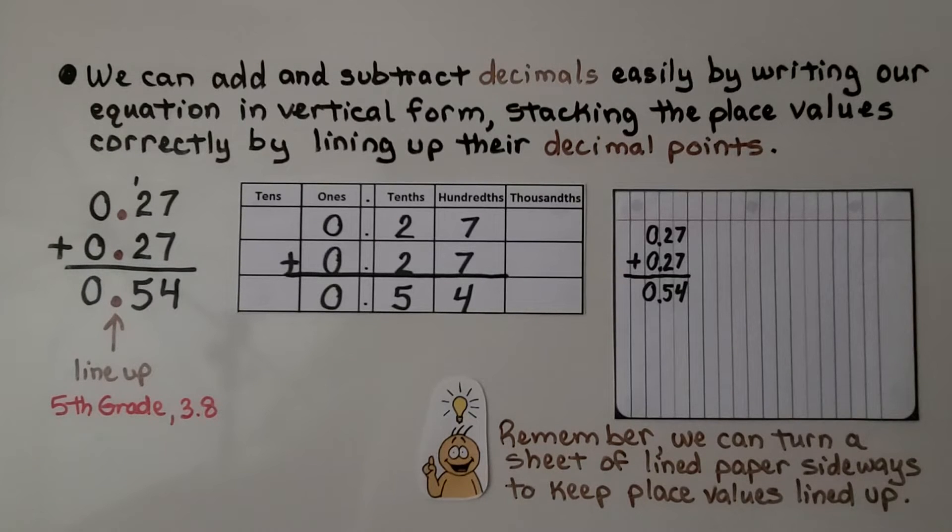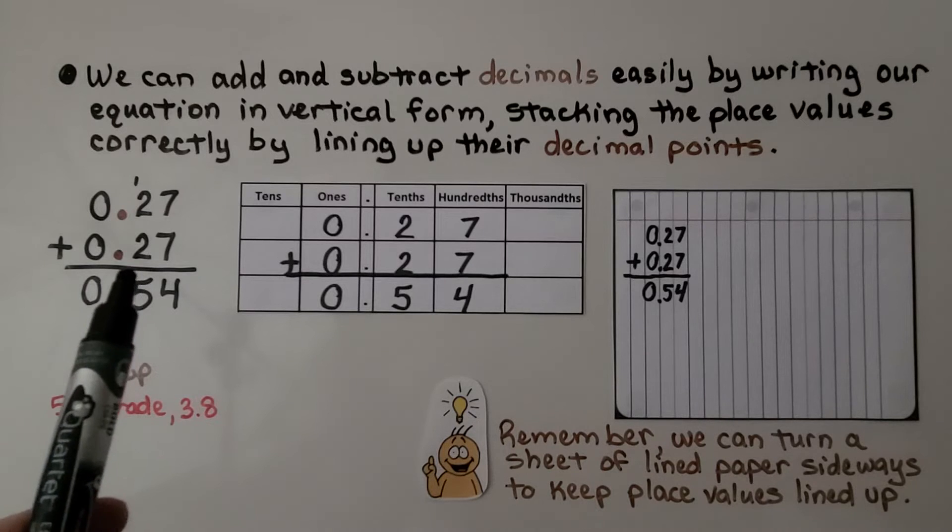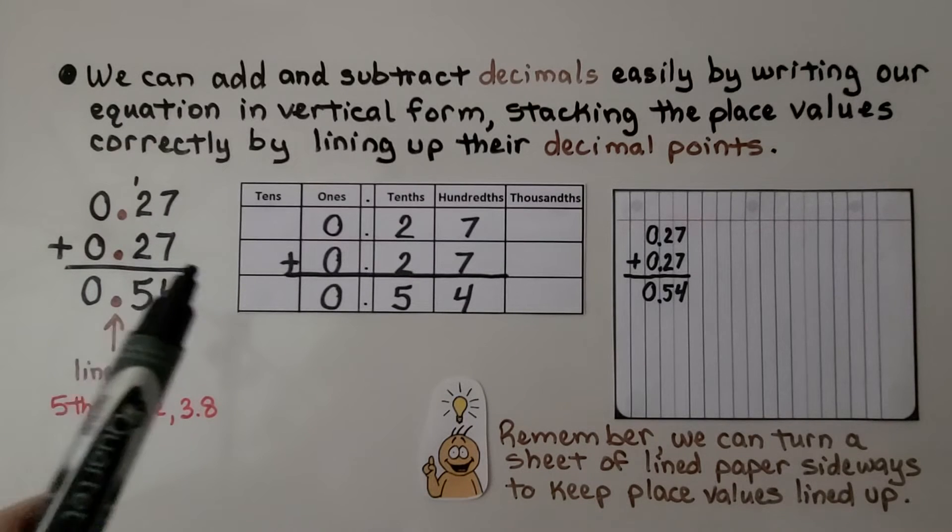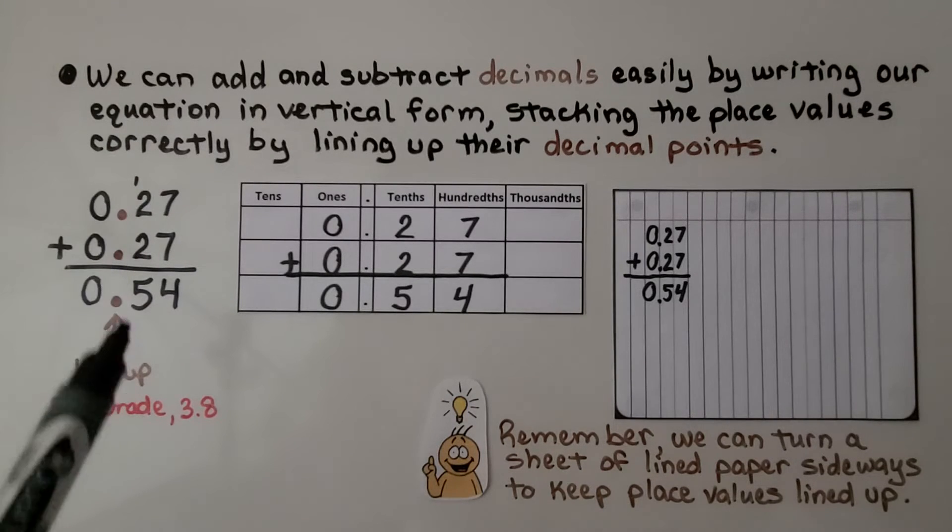We can add and subtract decimals easily by writing our equation in vertical form, stacking the place values correctly, and lining up the decimal points.